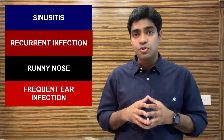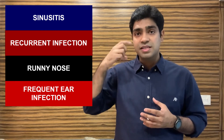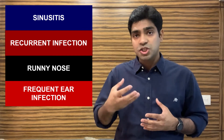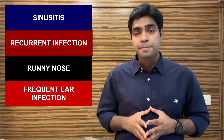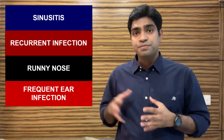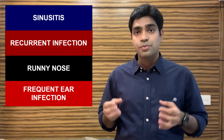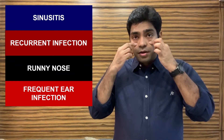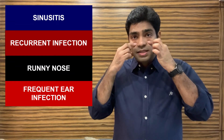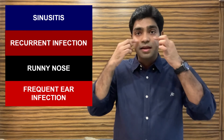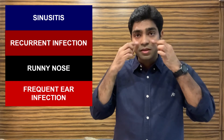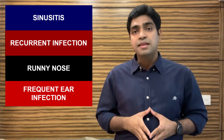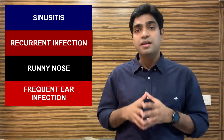The other problems associated with enlarged adenoids include frequent infection and runny nose, because enlarged adenoids are blocking the nasal cavity. There are chances of developing sinusitis — infection in the sinus cavities within the skull, in the head, in the maxilla region and the cheek region. A child may also develop sinusitis.